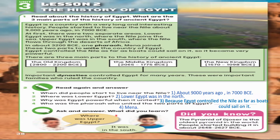Exercise 3: Ask and answer — what did you learn? Where was Upper Egypt? It was in the south. Did you know the Pyramid of Djoser is the oldest pyramid in the world? People started building it in about 2648–2627 BC. Djoser is Zoser in Arabic.